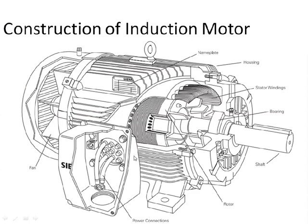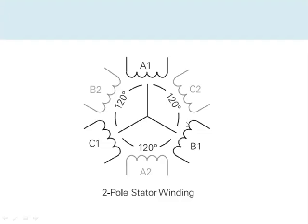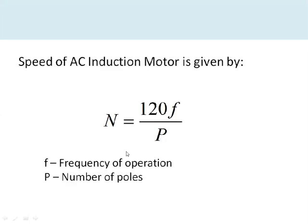This is the construction of a typical induction motor. The stator windings and rotor are the important parts. When power is applied to the stator winding, a rotating magnetic field is generated, which interacts with the rotor and causes it to rotate. The number of times each stator phase winding repeats defines the number of poles. Here, a particular phase winding is repeated two times, making this a two-pole, three-phase induction motor.